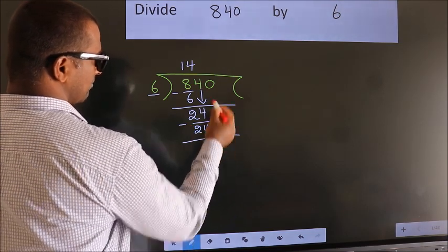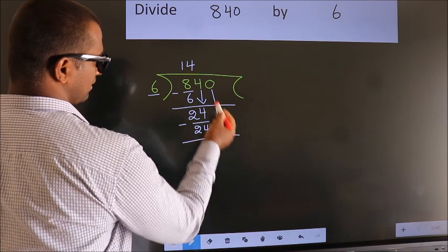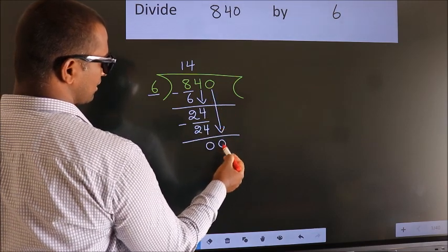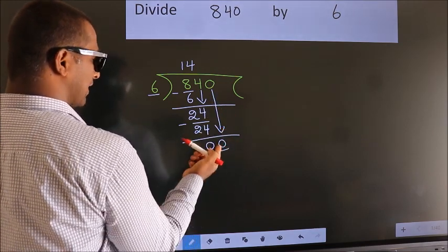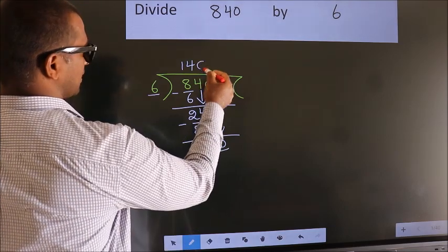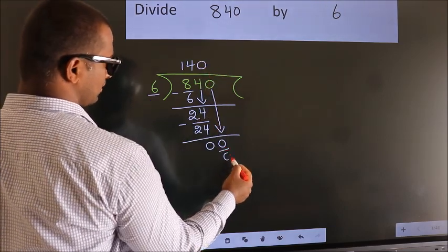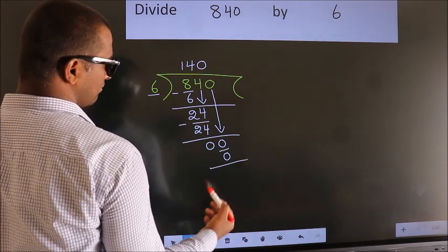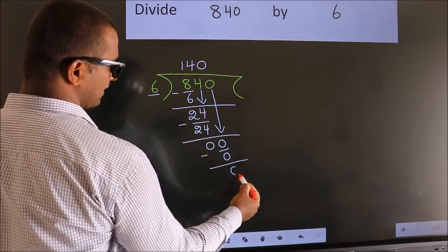After this, bring down the beside number. 0 down, so 0. When do we get 0? In 6 table, 6 times 0 is 0. Now, we subtract. We get 0.